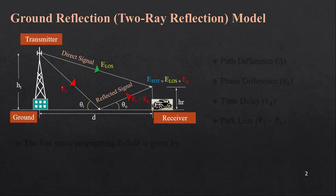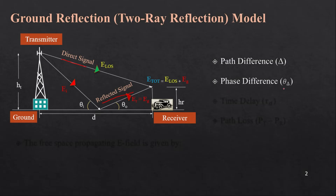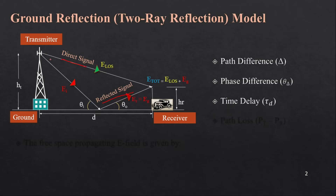The purpose of this theory is to calculate the path difference between the two signals — the direct signal and the reflected signal — since both travel different paths. We also find the phase difference, because the direct signal will have a different phase compared to the reflected signal. There will also be a time delay, since the direct signal arrives earlier and the reflected signal takes more time. Finally, based on the electric field and received power, we calculate the path loss.